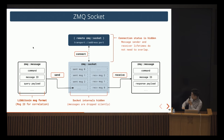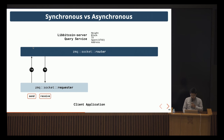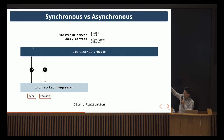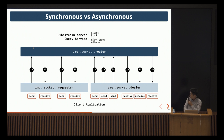ZMQ messages have frames: for Libbitcoin you have the server command, a message ID to correlate queries, and the query and response payload. The message ID is returned in the response, so you can match the response to a specific query. You can connect to the server's router socket with either a requester socket — which is synchronous, one query per response — or a dealer socket, which lets you send many queries and receive responses asynchronously.